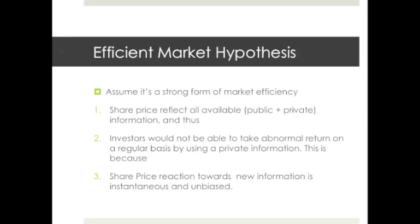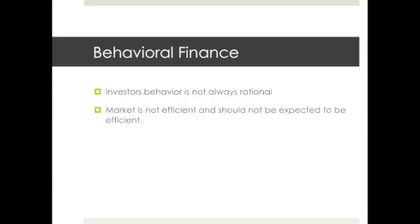Once information hits the market, the share price reaction is instantaneous and unbiased, leaving little possibility for people to take advantage using any information. Behavioral finance is on the other extreme — these people believe that investors are not always rational. Investors could react in different ways and perceive the same information differently, whether it is good or bad. Behavioral finance believes that the market is not efficient and should not be expected to be.